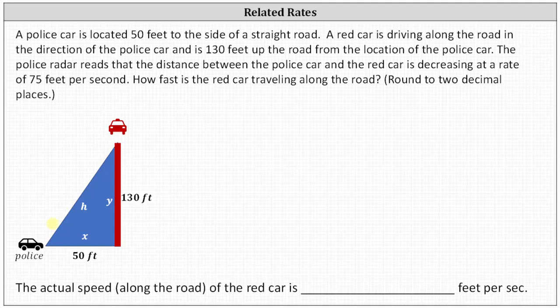In our situation, we can label X 50 feet and Y 130 feet. Notice how we don't know the length of H at the moment. And now we need an equation that relates H, X, and Y, which should make us think of the Pythagorean theorem, where in our case, H squared is equal to X squared plus Y squared.